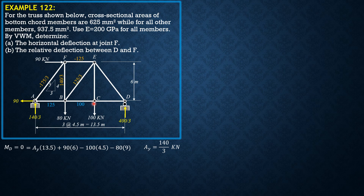At joint C, summation of forces Y gives 100 tension, and summation of forces X is obviously also 100. At joint D, summation of forces Y gives DE equal to negative 500 over 3. Check summation of forces X at joint D to verify it is 0. Finally, check joint E for equilibrium — summation of forces X and summation of forces Y should both be 0. If your answers match, all forces are correct.